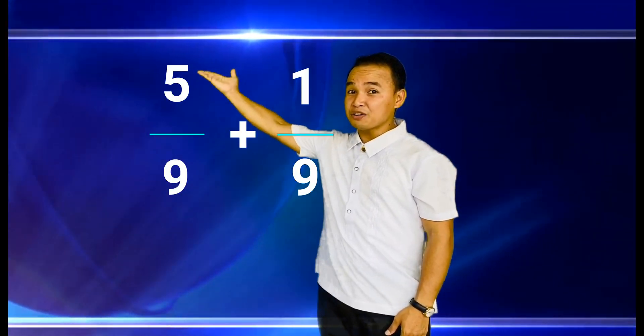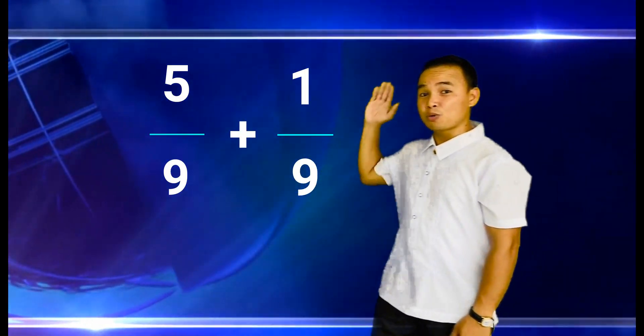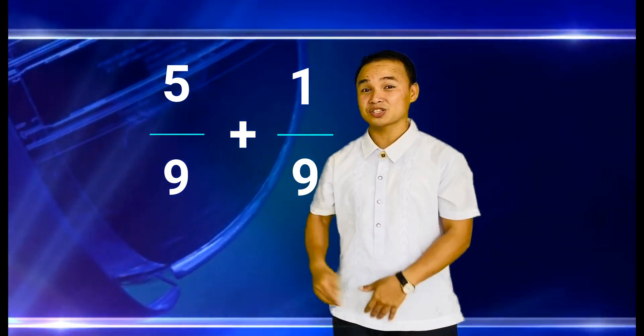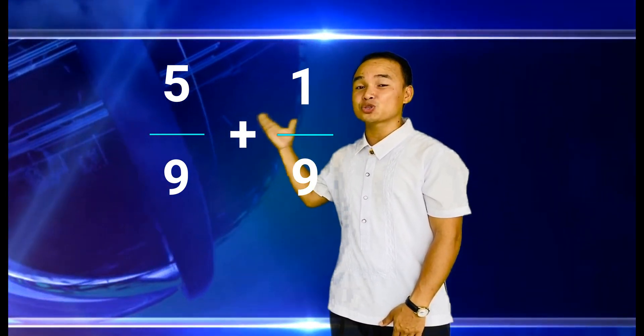For example, we add 5 over 9 plus 1 over 9. Step 1. Write the given. So that's 5 over 9 plus 1 over 9. Step 2. You need to add the numerator and copy the common denominator. And step 3. Simplify. Write the answer in lowest terms.